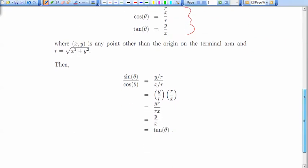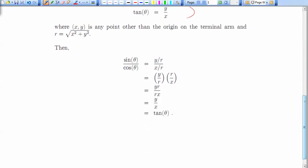For instance, one thing we could do is take sine theta and divide it by cos theta. If we do that, we get y over r divided by x over r, of course that's one fraction divided by another, so I just take the top times the reciprocal of the denominator.